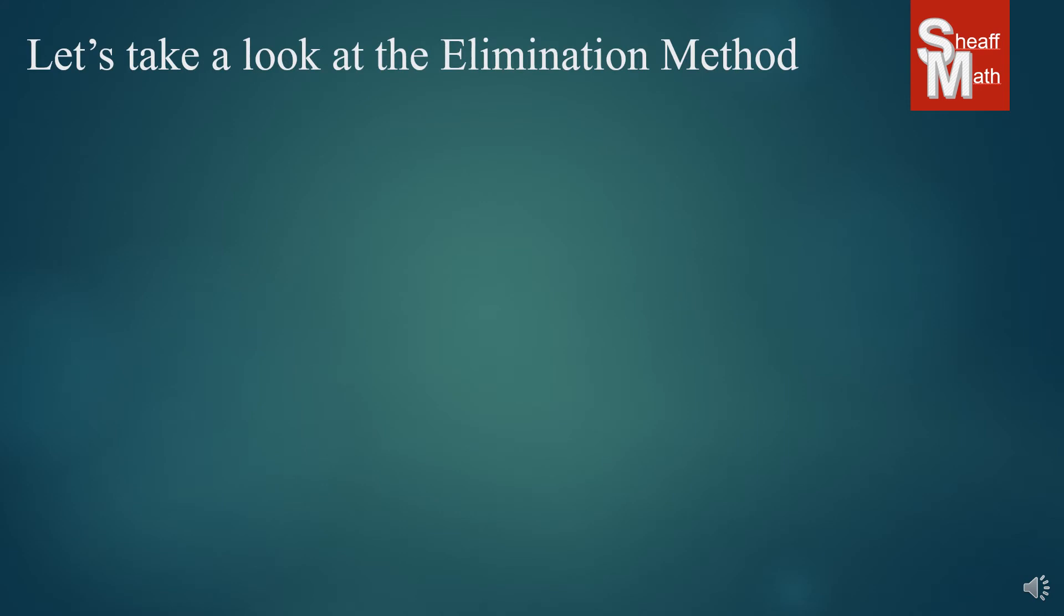Let's look at the elimination method. Here is a system of equations, and they're both in standard form. If I were to try to graph these, it would not be too easy. If I were to try to do the substitution method, I would have to manipulate the numbers quite a bit, and might get some fractions and whatnot. This third method that we have is called the elimination method. And what we do is, we add the two equations together. What happens to the y's if we add them? Well, they eliminate, don't they?